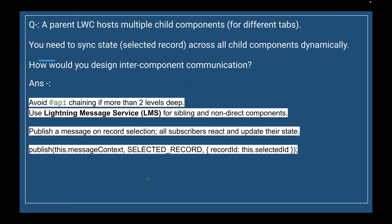A parent LWC hosts multiple child components for different tabs and you need to sync selected record state across all child components dynamically. For inter-component communication, avoid @api chaining if more than two levels deep. Use Lightning Message Service for sibling and non-direct components — publish a message on record selection and all subscribers react and update their state using MessageContext and publish().